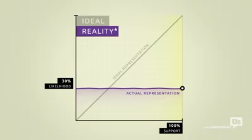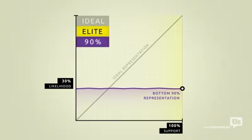This flat line only accounts for the bottom 90% of income earners in America. Economic elites, business interests, people who can afford lobbyists, they get their own line.